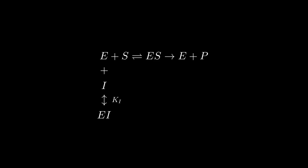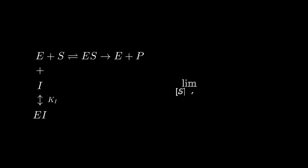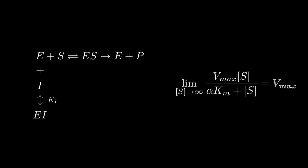However, looking at the LB plot, Vmax did not change. Intuitively, this is because if the substrate concentration far exceeds inhibitor concentration, the substrates will outcompete the inhibitors, occupying all free enzymes. Mathematically, we can simply take the limit as S concentration approaches infinity.